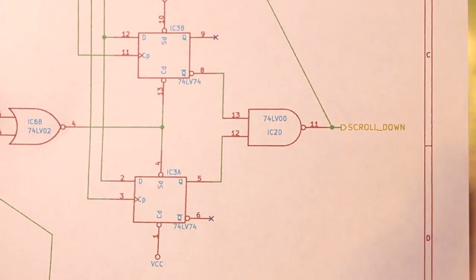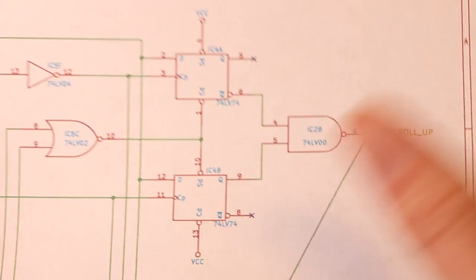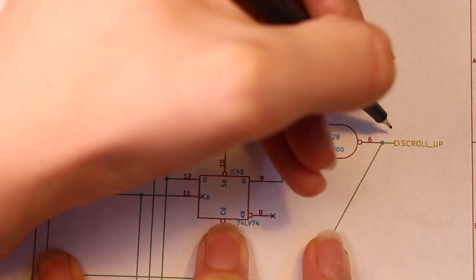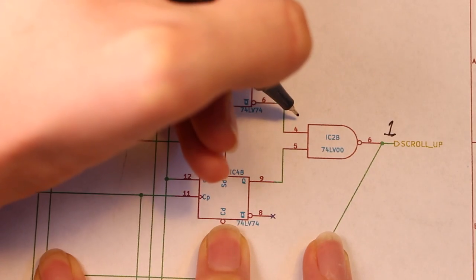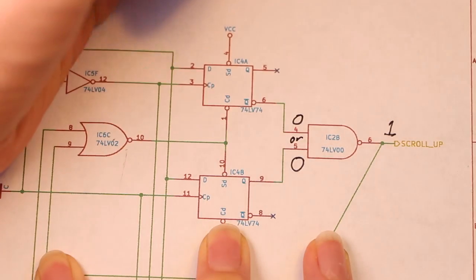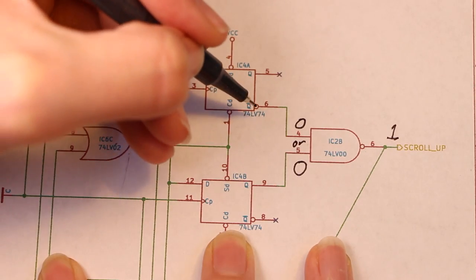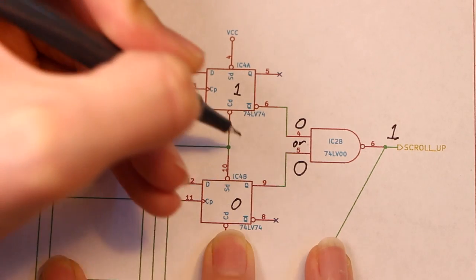This NAND gate that's being used to generate the scroll down and the scroll up signals is actually kind of misleading since the logical operation here is more like an OR. If we want to see a 1 on this scroll up output it means we need to see a 0 on either of these inputs to the NAND gate. Since one of these flip-flops is inverted that actually means that we want this flip-flop to be a 1 or this flip-flop to be a 0.